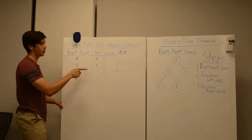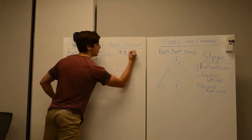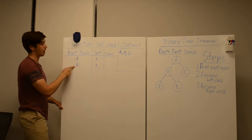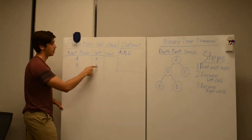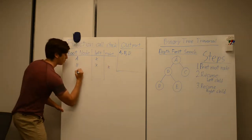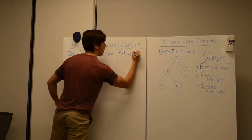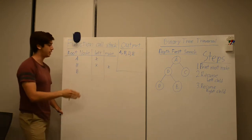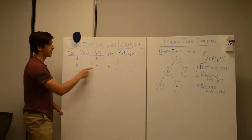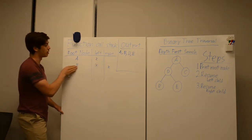Since D is a leaf node it has no children, so all we are going to do is output D and then return. Since we've already gone to the left of B, we're going to go to the right to E. We're going to print out E. E is a leaf node just like D, so we are going to return, popping that off the call stack. Since B has gone to the left and to the right, it is done with all the steps and will also return.